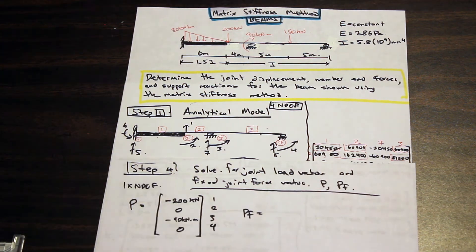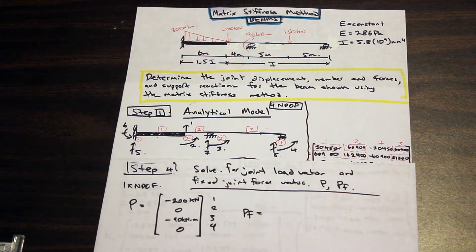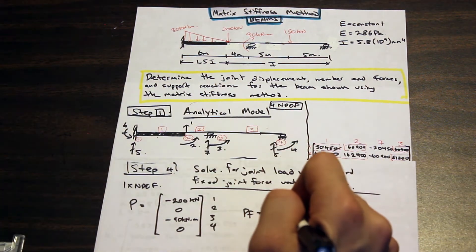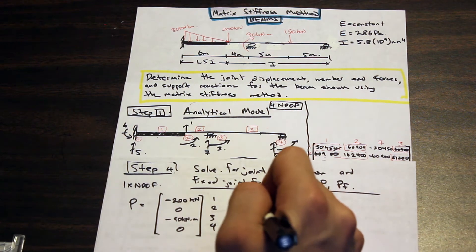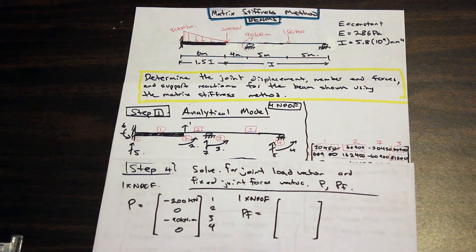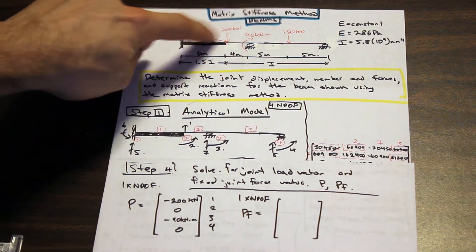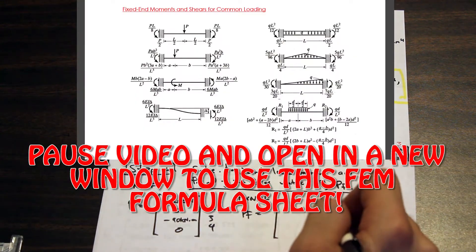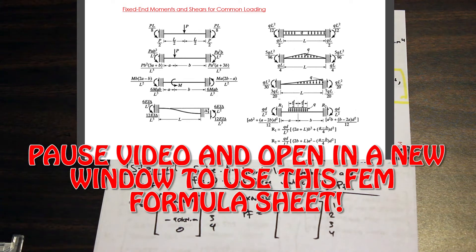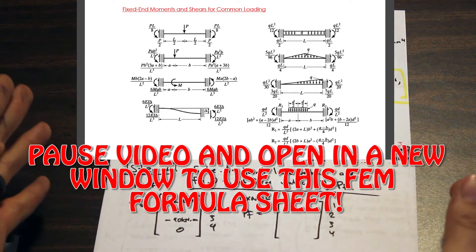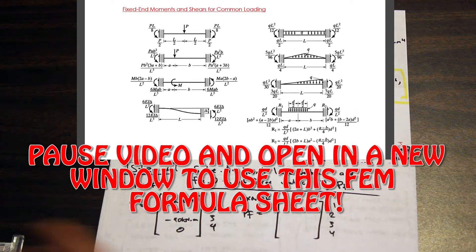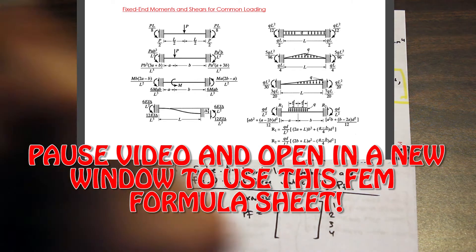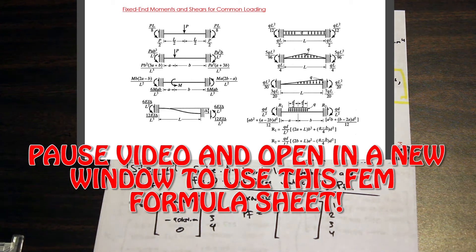The PF vector — the fixed joint force vector — is essentially the fixed end moments of the beam transferred into PF. It shares the same dimensions as P: one by the number of degrees of freedom. We need to find the fixed end moments for each member and transfer them into PF at the correct code numbers, just like we did with S. I'll put up the fixed end moment table I used.